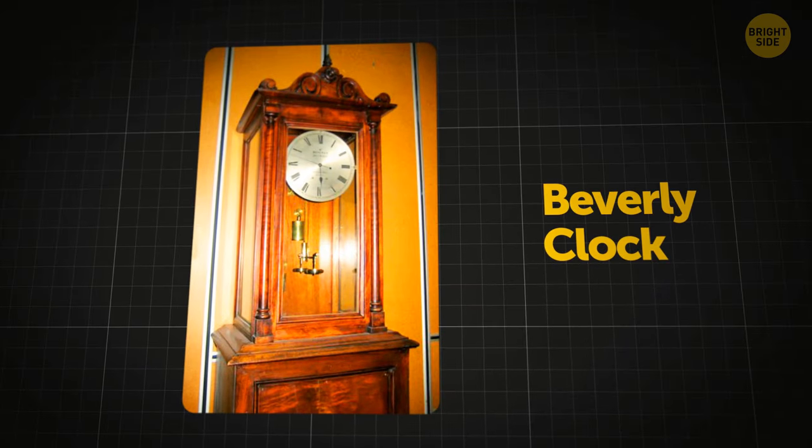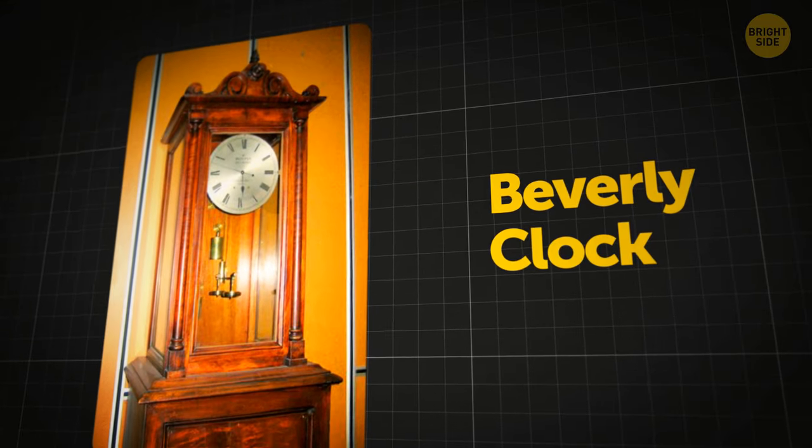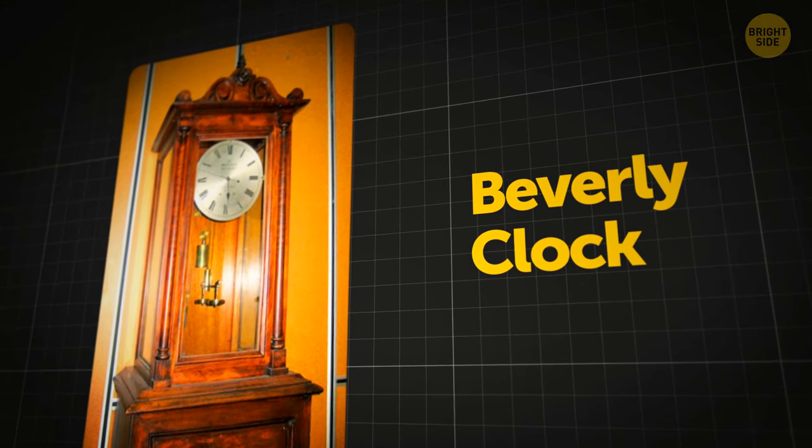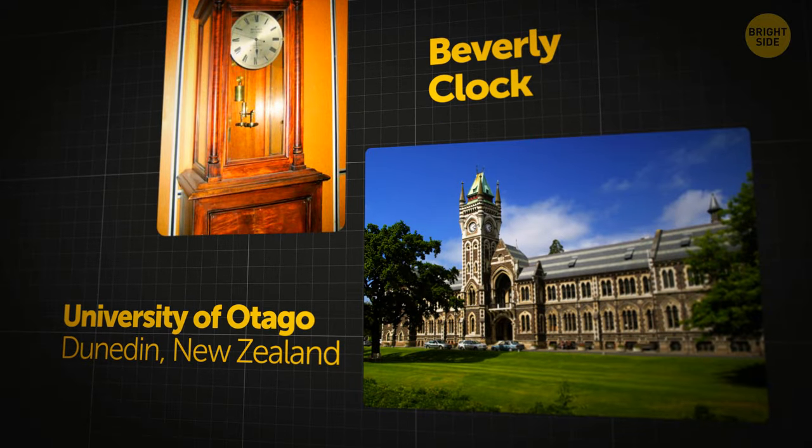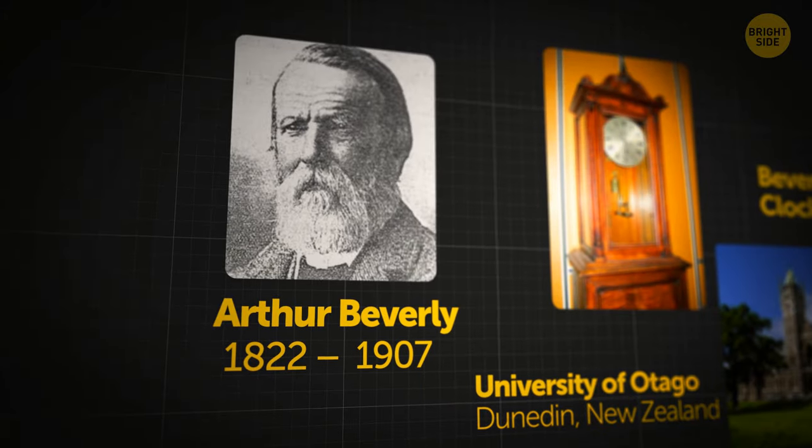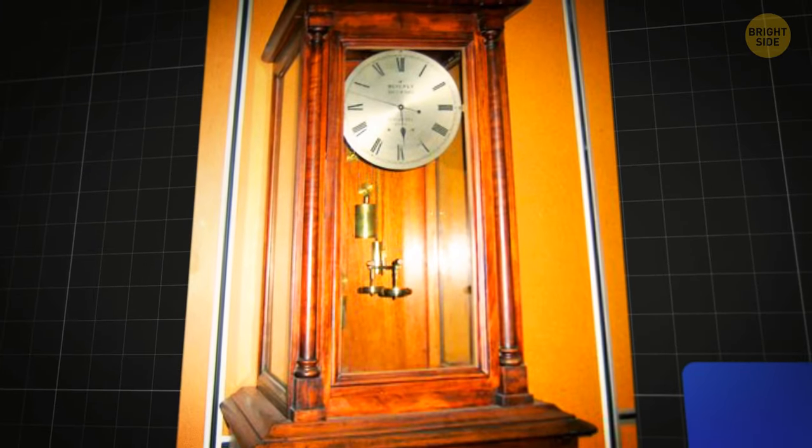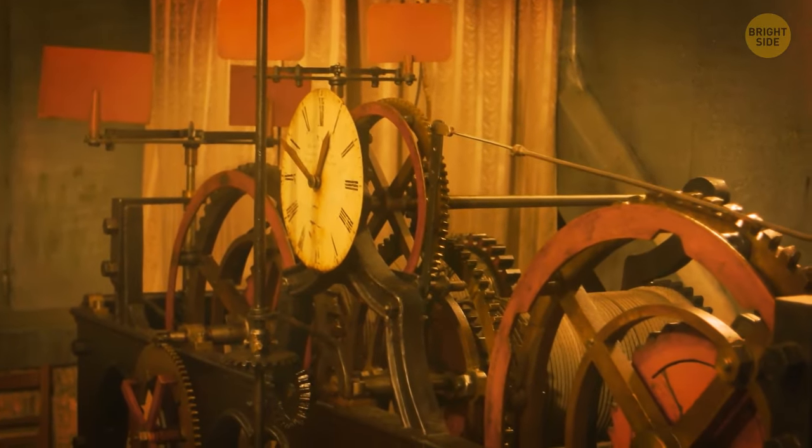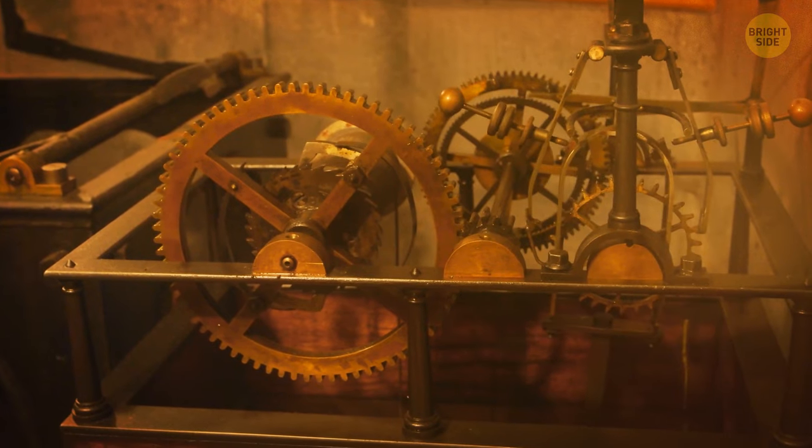A clock in New Zealand came much closer to a true Perpetua Mobile, the Beverly Clock. It sits in the hall of the Department of Physics at a university in Dunedin. Arthur Beverly, a local watchmaker, constructed it in 1864. The man wound it on the day he made the clock, and it has been running ever since.